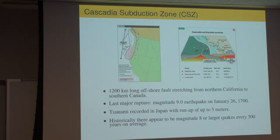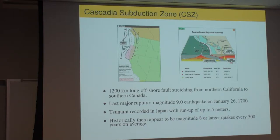We have this Cascadia Subduction Zone, which turns out to be active. For a long time it was thought to be inactive. The last major earthquake was in 1700. It was only in the 1980s that people realized it was still active and that we have potentially huge earthquakes in this part of the world. Looking at evidence from past earthquakes, they've determined there is an earthquake roughly every 500 years of magnitude 9 or so — something like the one that happened in Japan in 2011 or Sumatra in 2004.